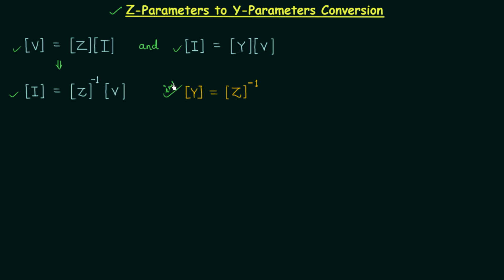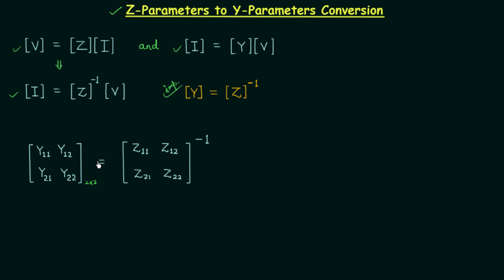The admittance matrix is a 2×2 matrix having the elements Y11, Y12, Y21, and Y22, and it will be equal to the inverse of the impedance matrix. The impedance matrix is also a 2×2 matrix having the elements Z11, Z12, Z21, and Z22. In the last lecture I explained how we can calculate the inverse of a matrix.